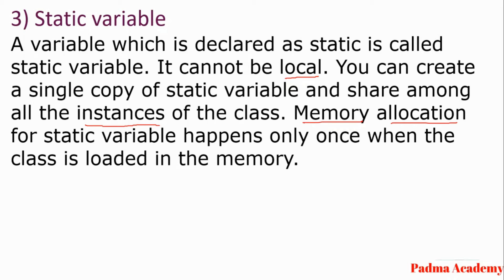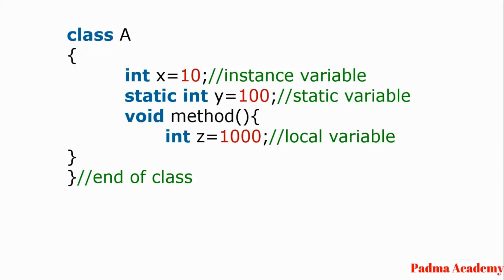Now we will see an example covering local variable, instance variable, and static variable. This is an example in which we have declared one class A. Inside that we have declared x = 10, which is an instance variable because it is declared outside the method but inside the class. Then we have int y, which is a static variable because it has the keyword static in front of it.